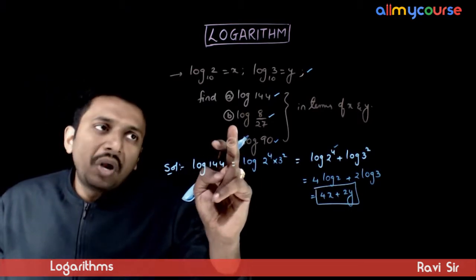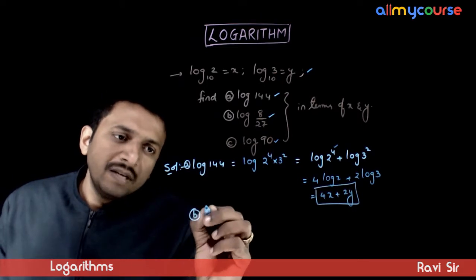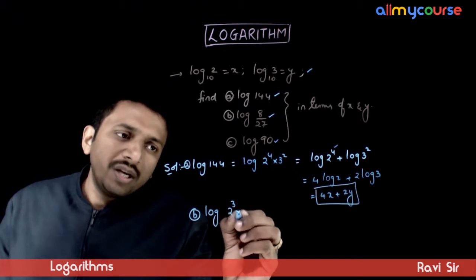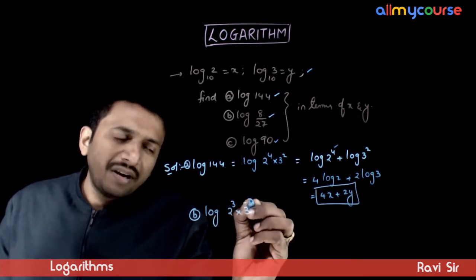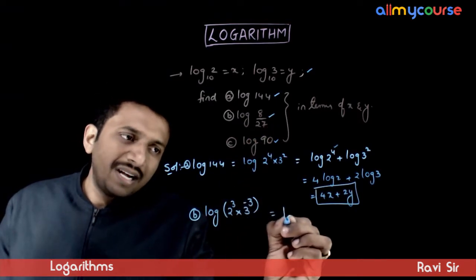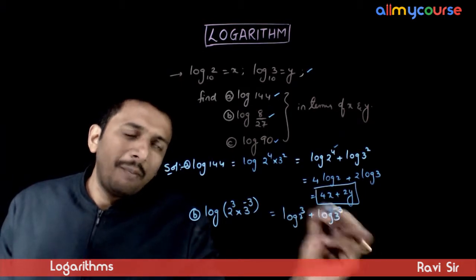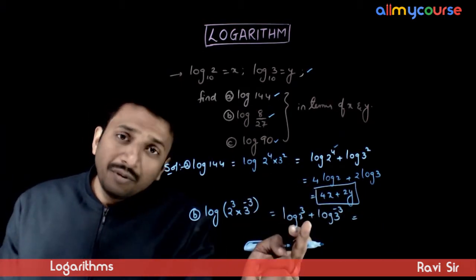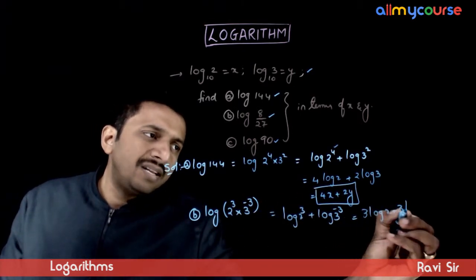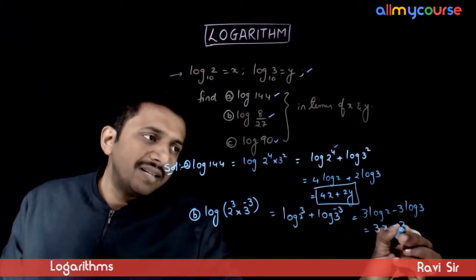Next, if you have log 8 by 27, log 8 by 27 is nothing but log of 2 cube into 3 power minus 3. 1 by 27 is 3 power minus 3. That can be written as log 2 cube plus log 3 power minus 3. Now if you use the power rule, this becomes 3 log 2 minus 3 log 3, that is equal to 3x minus 3y.